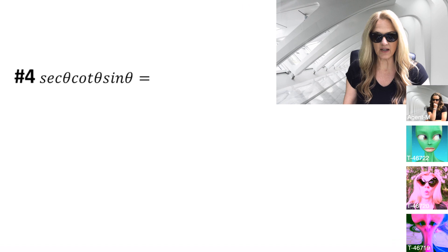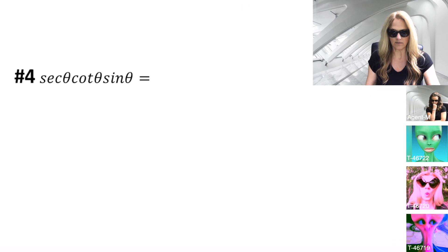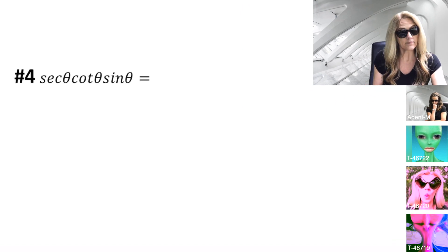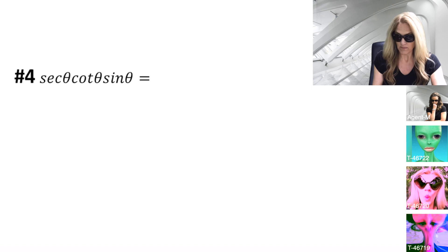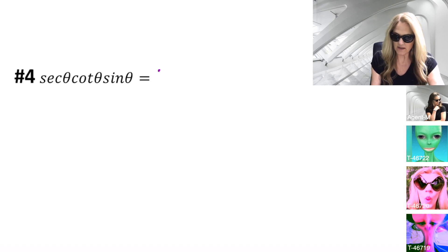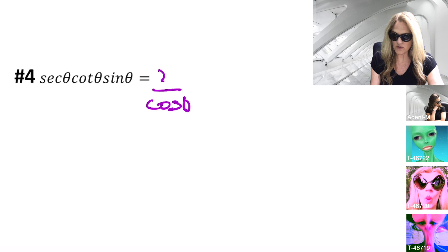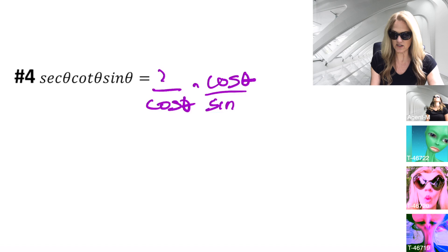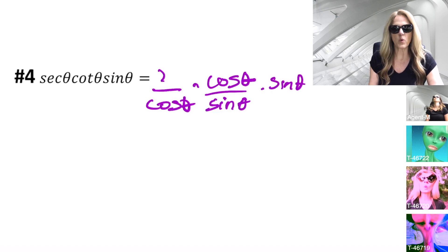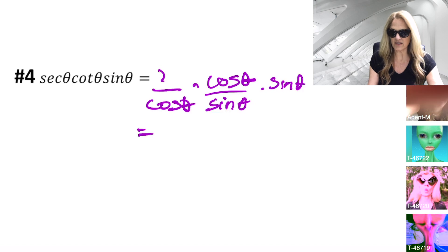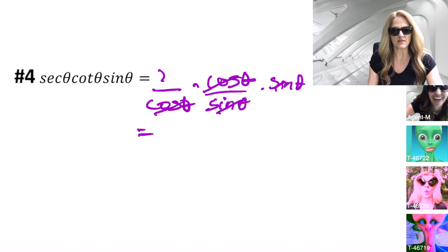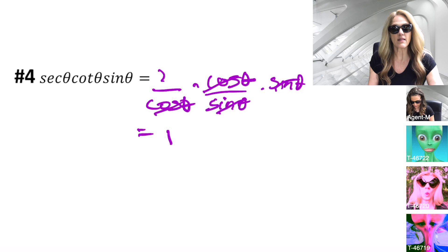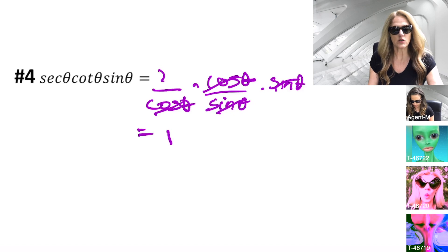Number four. Secant, cotangent, sine. Secant theta, cotangent theta, sine theta. Secant is what? Yes, you better know, trainee. One divided by cosine theta. Cotangent, cosine divided by sine theta. Sine, sine is already in terms of sine. This is a wonderful outcome. Cosines divide, sines divide. My answer is one. Trainees, this is acceptable. You try the next one.